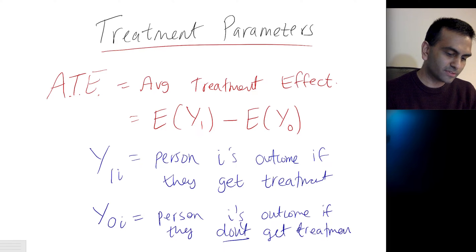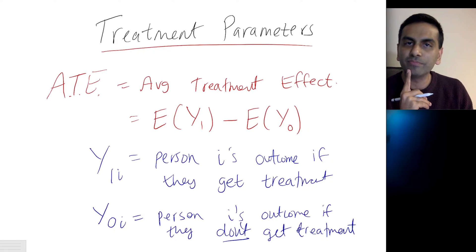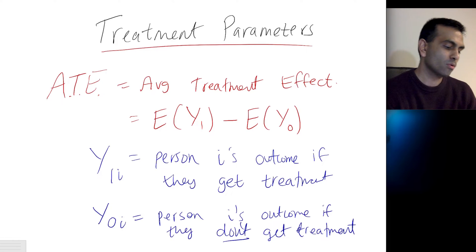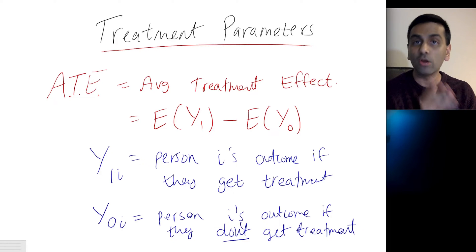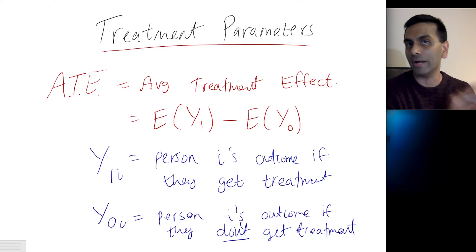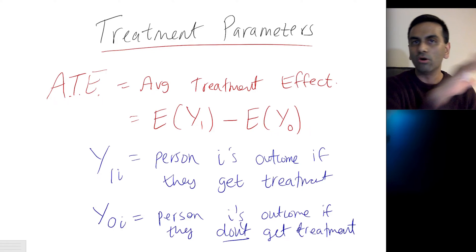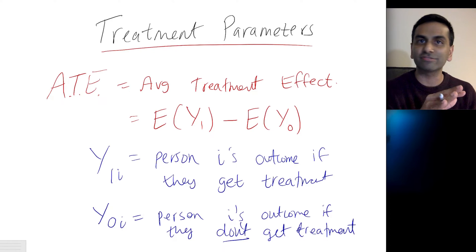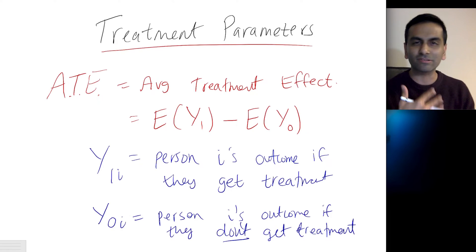This is what's called the fundamental problem of causal inference: for any given person, you can only observe one of these two. You can only either observe that person's Y0 or that person's Y1. You can't observe the same person at the same point in time with and without a college degree, holding constant every other life circumstance, including what year it is and how the economy is.